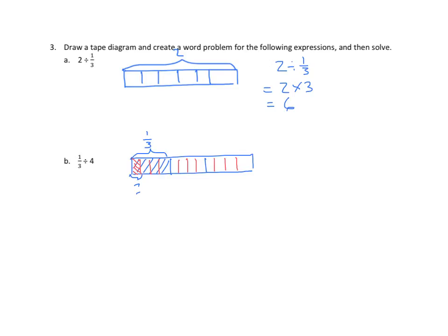Again, the math. 1 third divided by 4. If we look at our diagram, we partitioned the whole into 12 parts. So how many are shaded out of the 12? It's 4 out of 12. So 4 twelfths divided by 4 equals 1 twelfth.